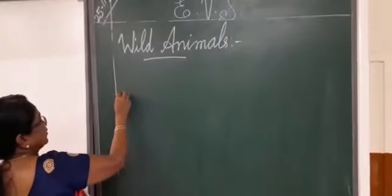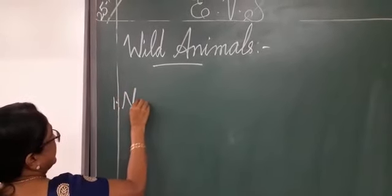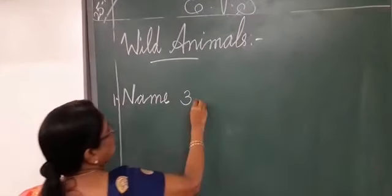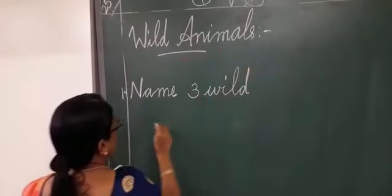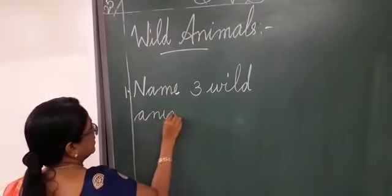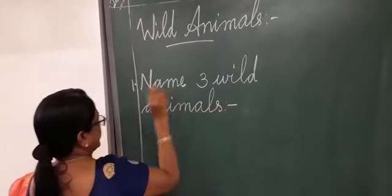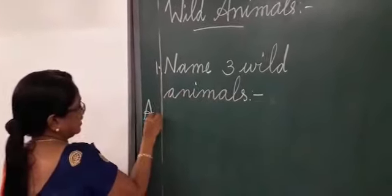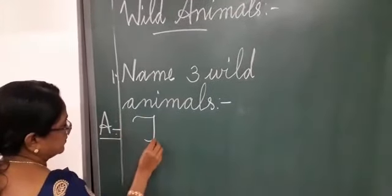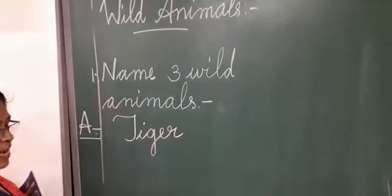Okay, so you write it on the board. Question number 1: Name three wild animals — N-A-M-E, W-I-L-D, A-N-I-M-A-L-S. Answer: we write tiger. Tiger is our national animal.